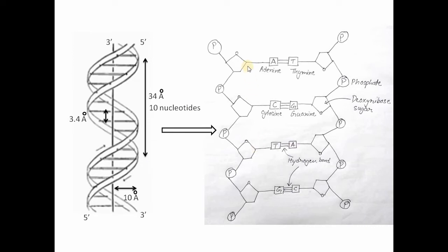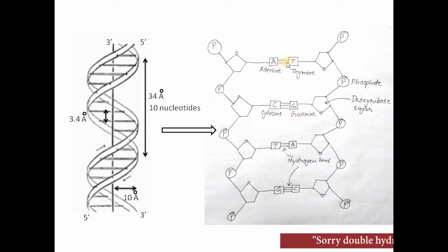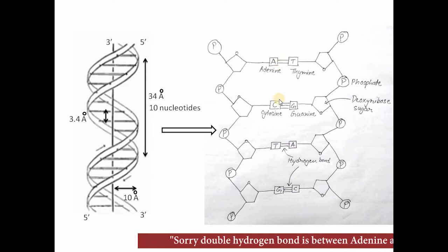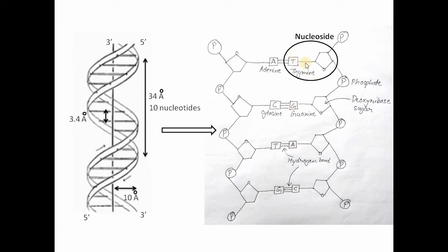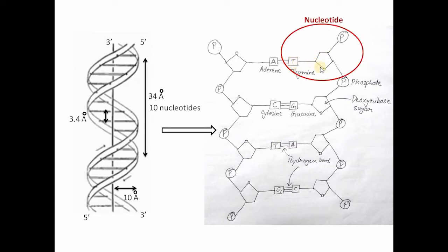The backbone of the DNA strand is made of deoxyribose sugar and phosphorus. There are 4 nitrogenous bases: adenine, thymine, cytosine, and guanine. Adenine and thymine form 2 hydrogen bonds, while cytosine and guanine form 3 hydrogen bonds. One nitrogenous base combined with a deoxyribose sugar is called a nucleoside.